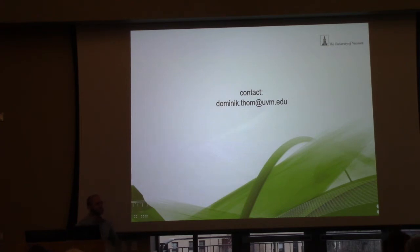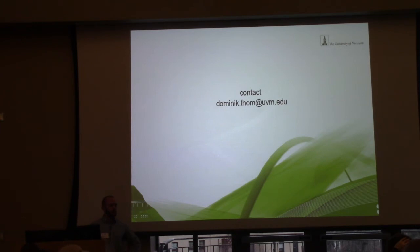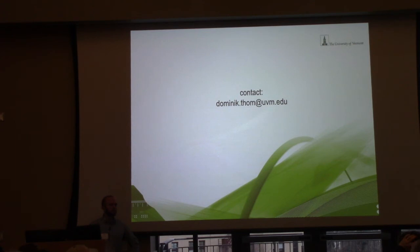Thank you for your talk. I was curious how you model the ecosystem performance in the future at plus four degrees? So this is just based on the Bayesian model — it's a sensitivity analysis, not a process-based model, which would probably be the most robust way to do that. We just test what happens if we switch the temperature and precipitation to something predicted for the end of the century, based on using the baseline data as the present state.